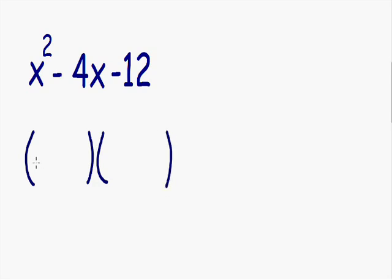And on the left side of each parentheses, we're going to place our x's. And this is because our first term is x squared. So when we multiply these x's together, x times x gives us our x squared term.